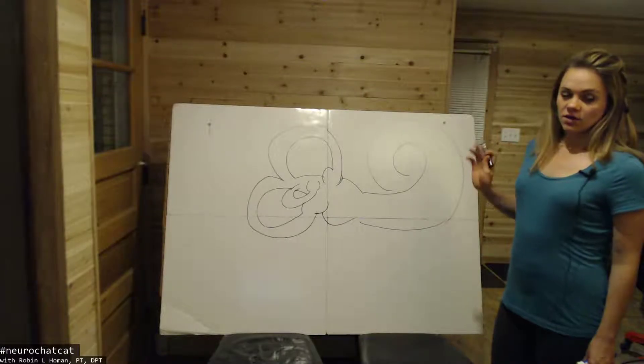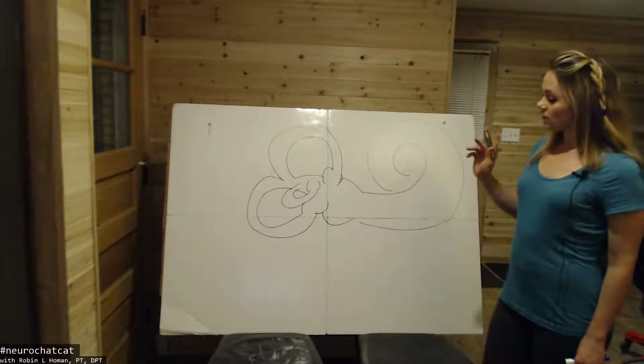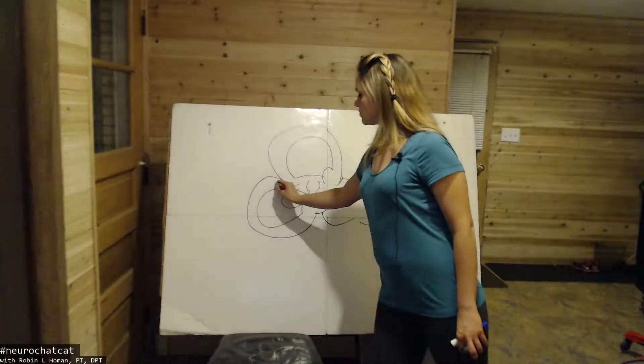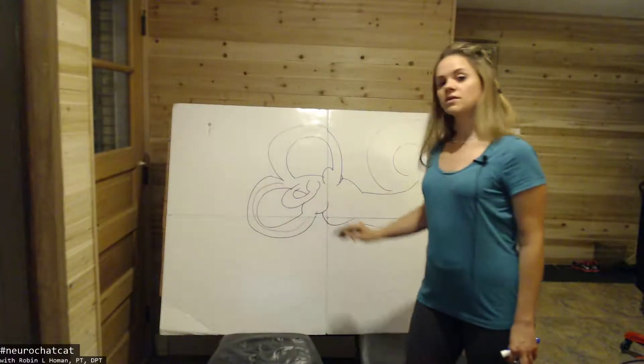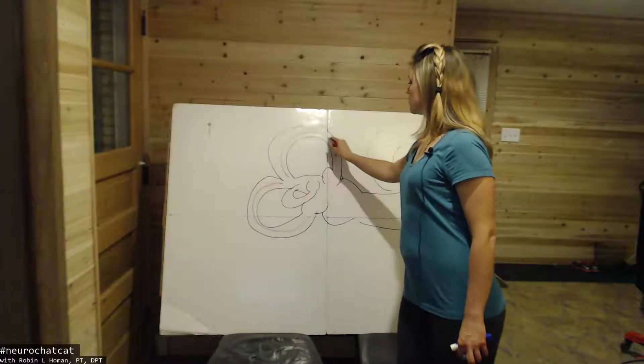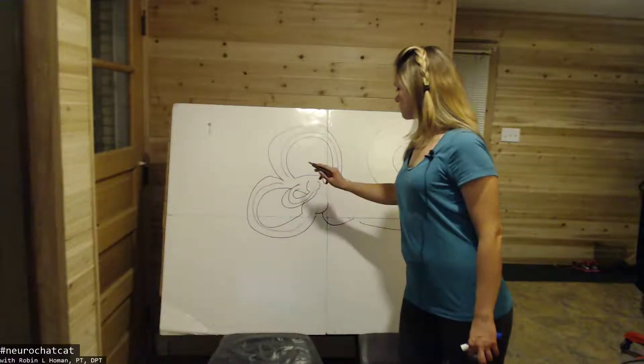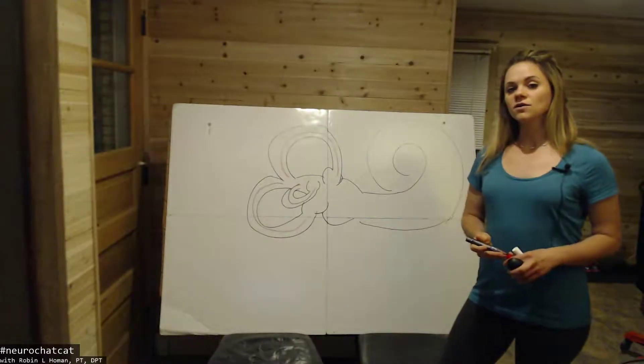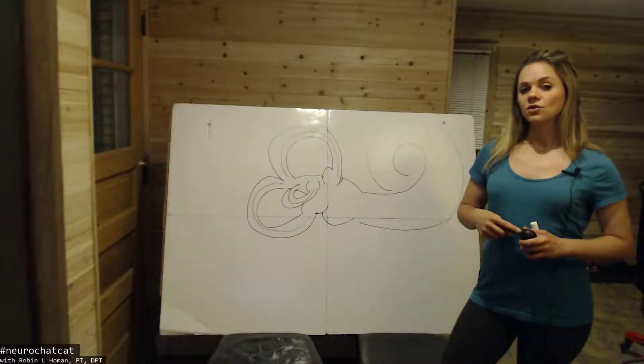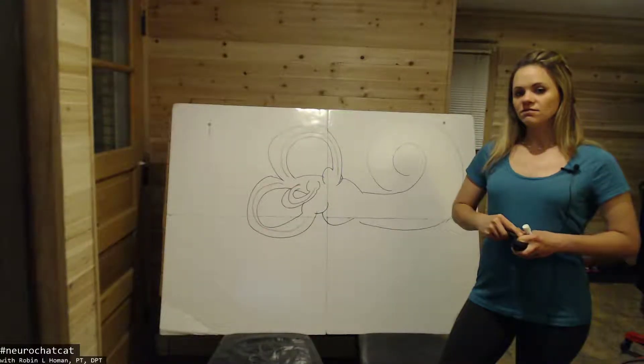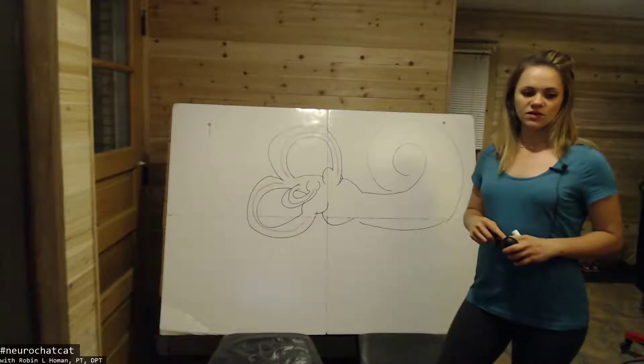We do have our three semicircular canals. We have the posterior, the anterior, and the horizontal. Now these canals are filled with fluid called endolymph. And that fluid is free to move within that canal.